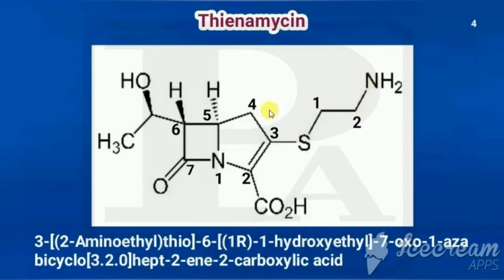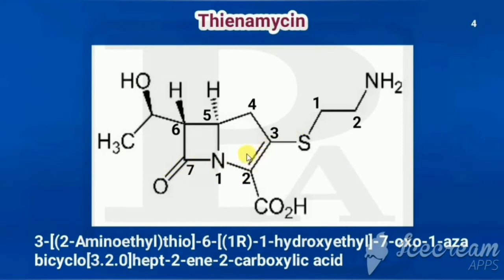Building the chemical name for thienamycin: the ketone at position 7 gives 7-oxo, nitrogen at position 1 gives 1-aza, the bicyclo descriptor is [3.2.0], and with the double bond between positions 2 and 3 it becomes hept-2-ene, giving hept-2-ene-2-carboxylic acid. The third position substituent is CH2-CH2-NH2: two carbons make it ethyl, with an amino group on the second carbon, giving 2-aminoethyl. Since it is connected via sulfur, it is (2-aminoethyl)thio.